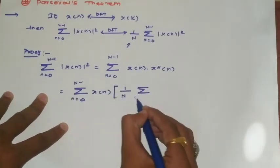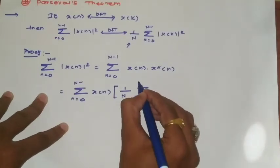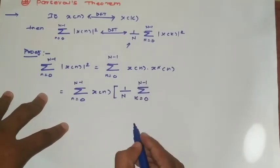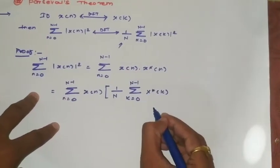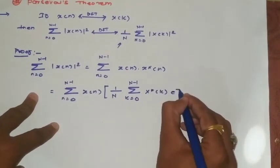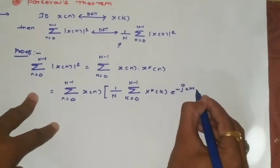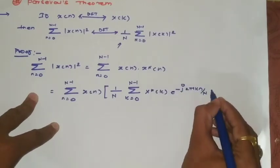This is a summation with respect to k from 0 to N-1. In this term, I can write X*(k) times e^(-j2πkn/N).